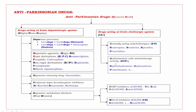Antihistaminics with anticholinergic activity use the mnemonic 'DOPA,' bold letters D, O, P. D: diphenhydramine. O: orphenadrine. P: promethazine.